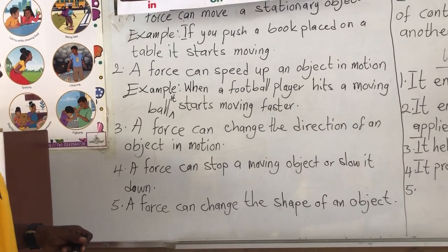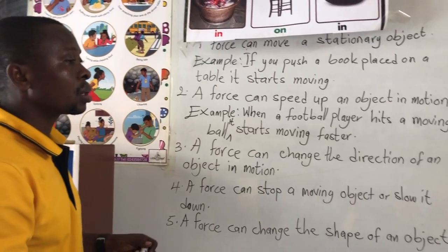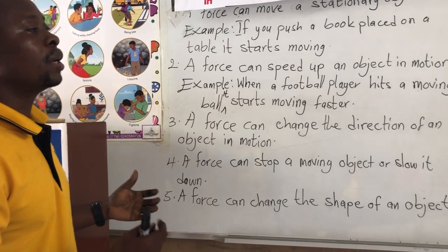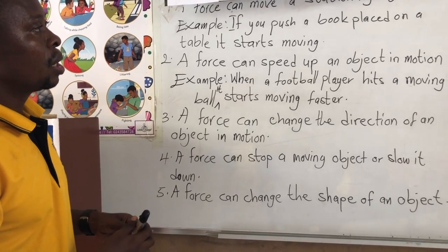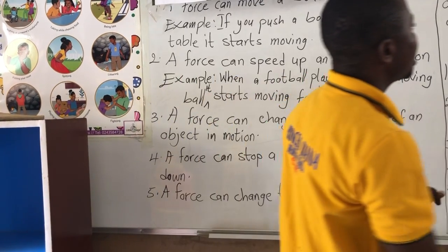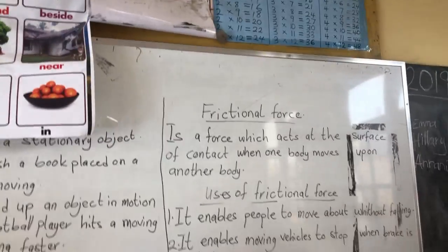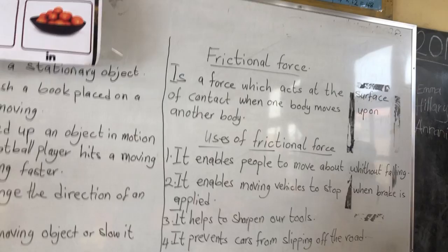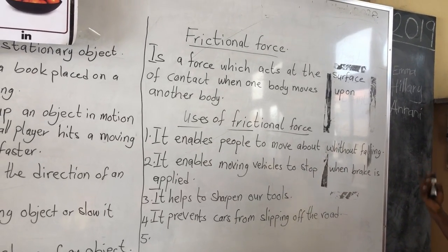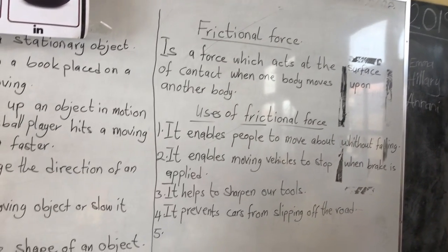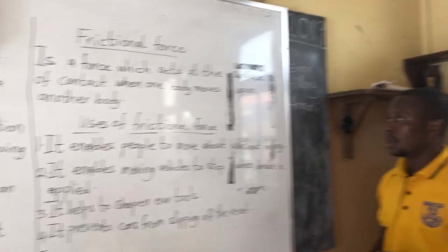So far, we have learned about five effects of force on an object or on a body. Now let's look at frictional force. In our previous lesson, we learned that friction force is a force that acts at the contact surface when one body moves over another body.